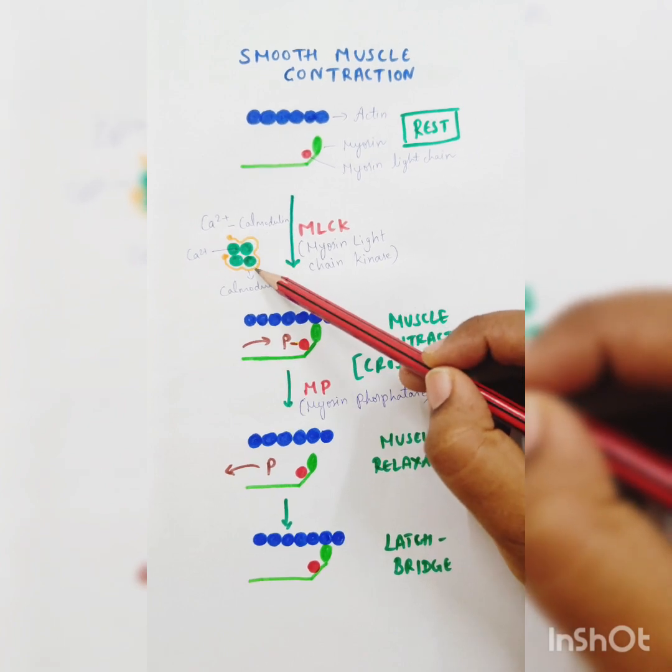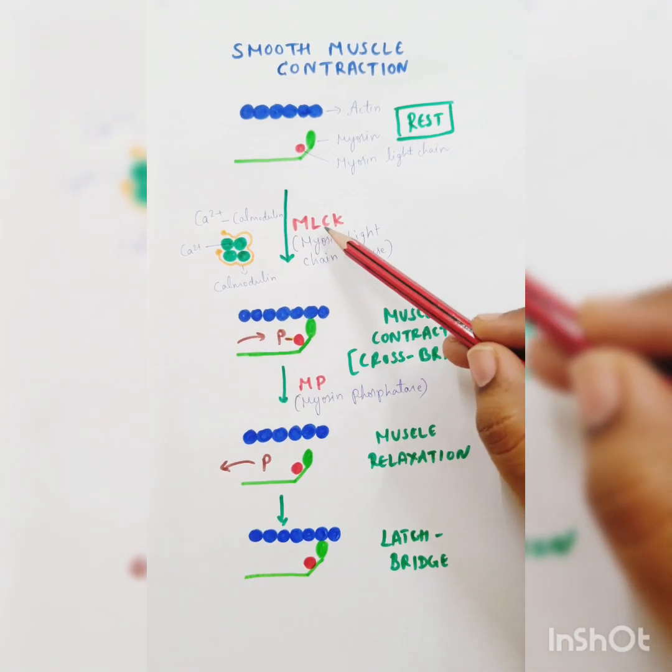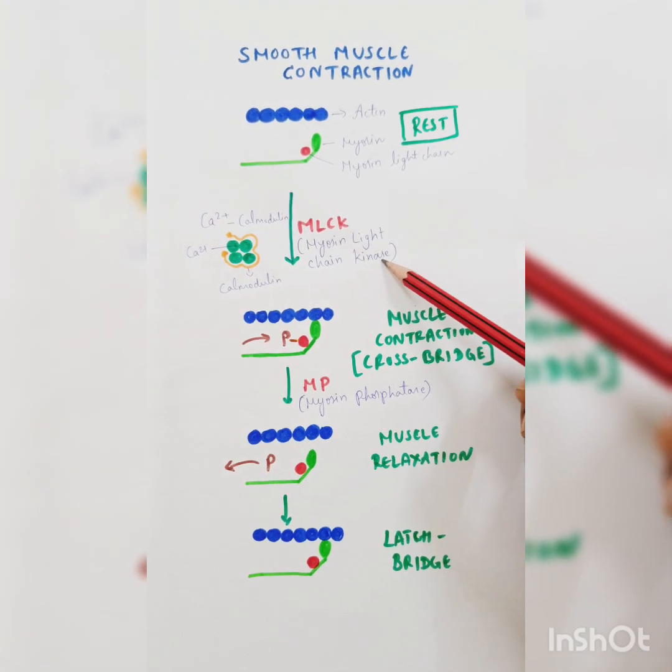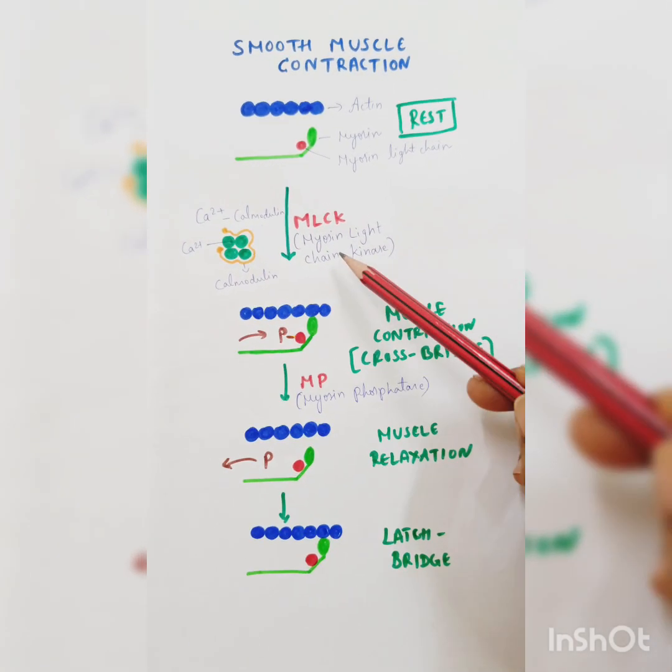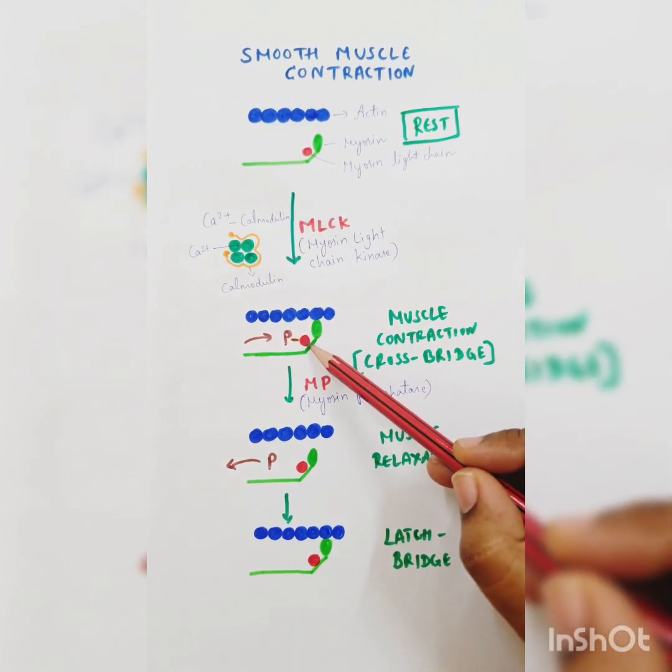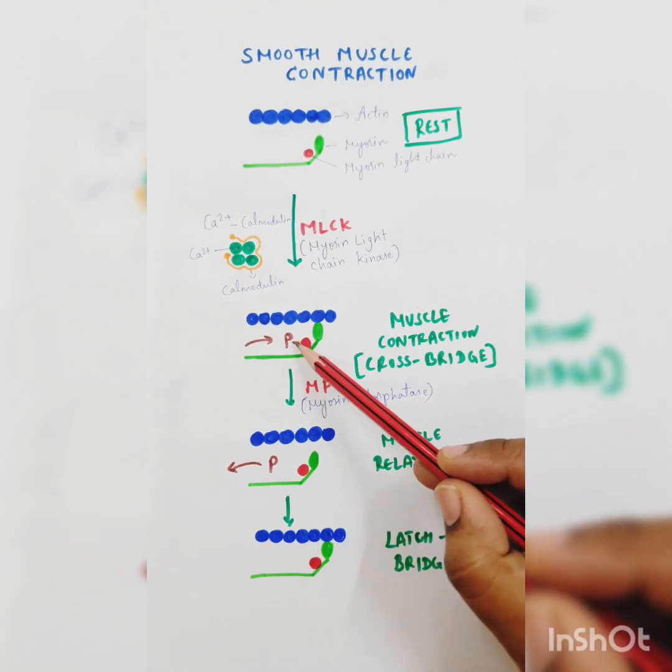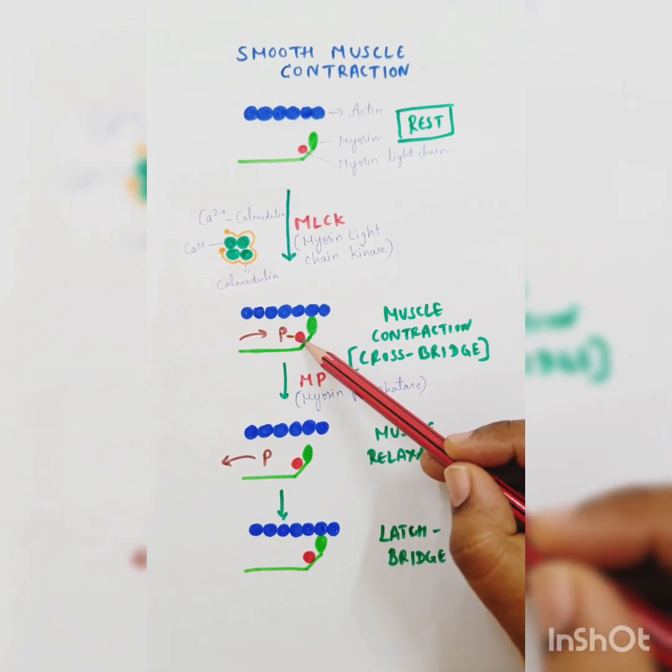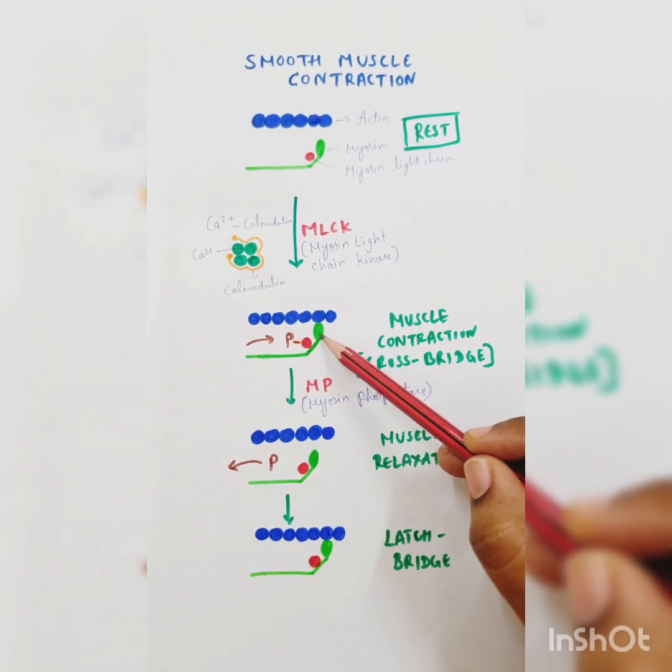This calcium-calmodulin complex activates myosin light chain kinase. Kinase is an enzyme in the body which helps in phosphorylation. As the name suggests, myosin light chain kinase phosphorylates the myosin head. You can see here a phosphate group is added from ATP, so the myosin light chain undergoes phosphorylation.